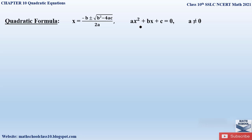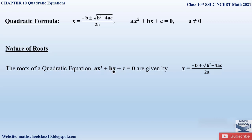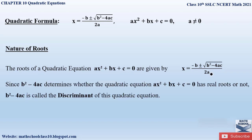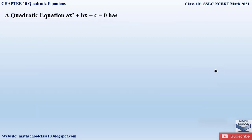The second topic is the nature of the roots — also a very important topic that can be asked in multiple choice questions. The roots of ax² + bx + c = 0 are given by x = (−b ± √(b² − 4ac)) / 2a. Here, b² − 4ac determines whether the quadratic equation has real roots or not, and is called the discriminant. Depending on its value, we determine whether roots are real, equal, or imaginary.